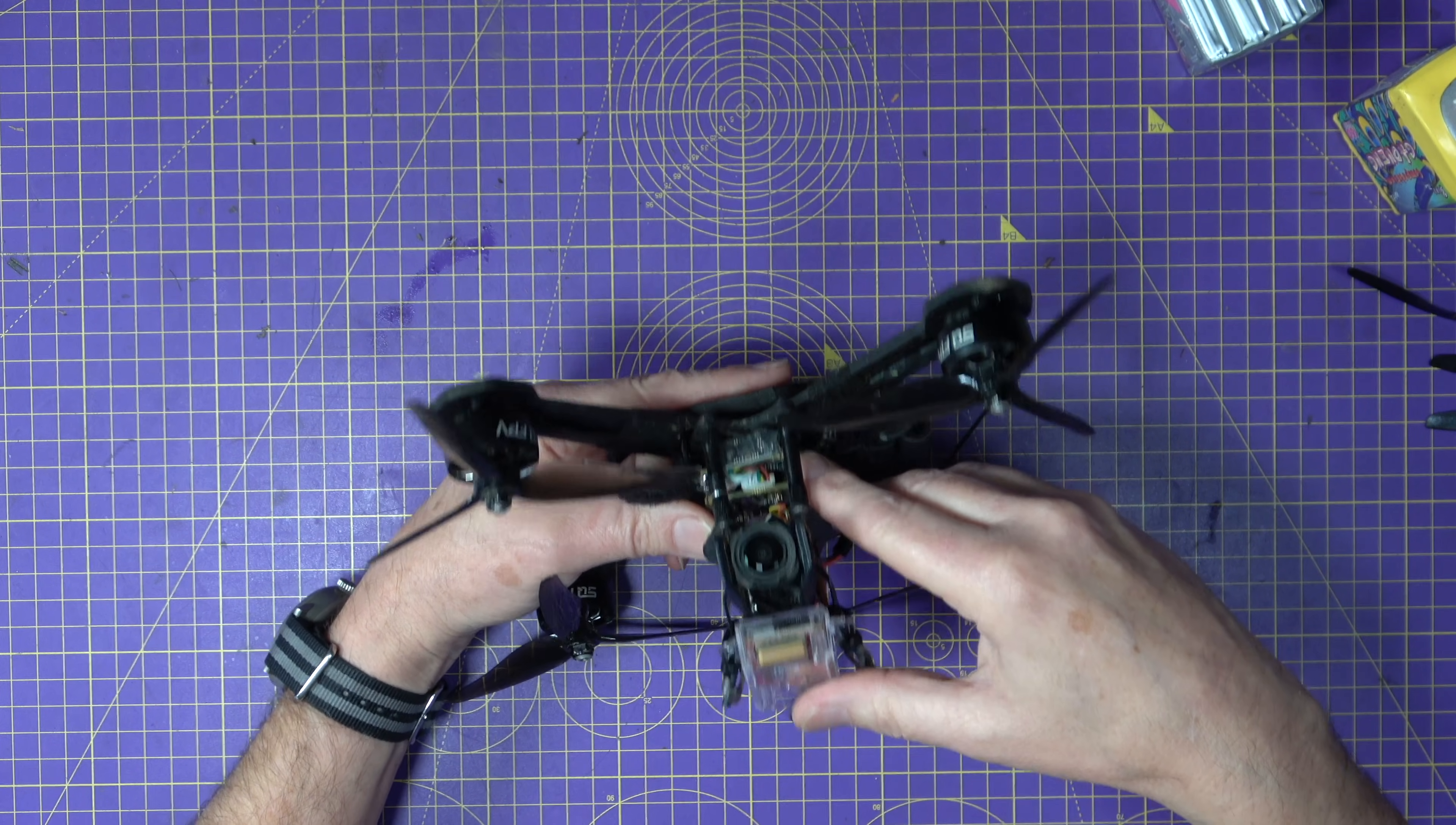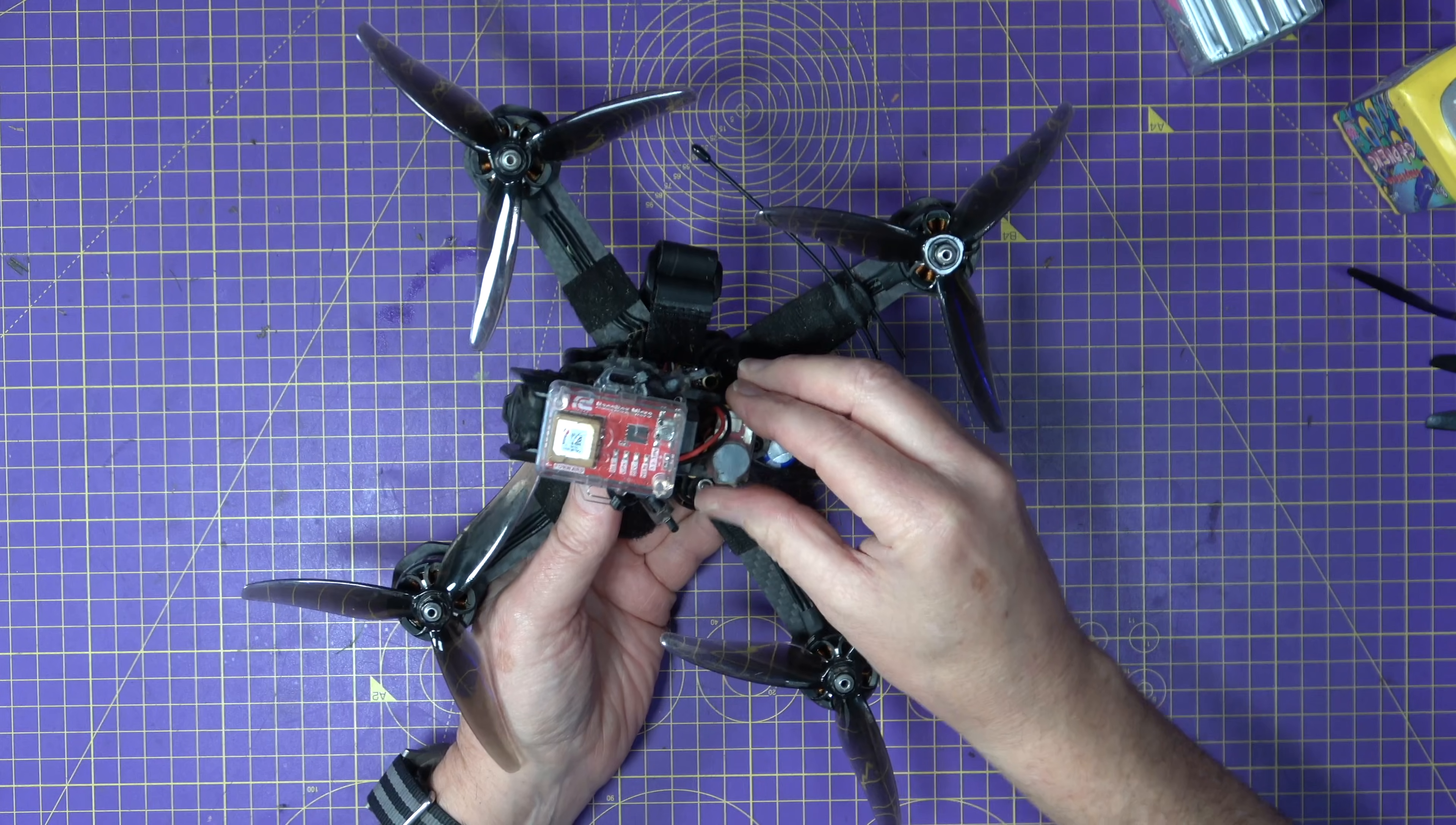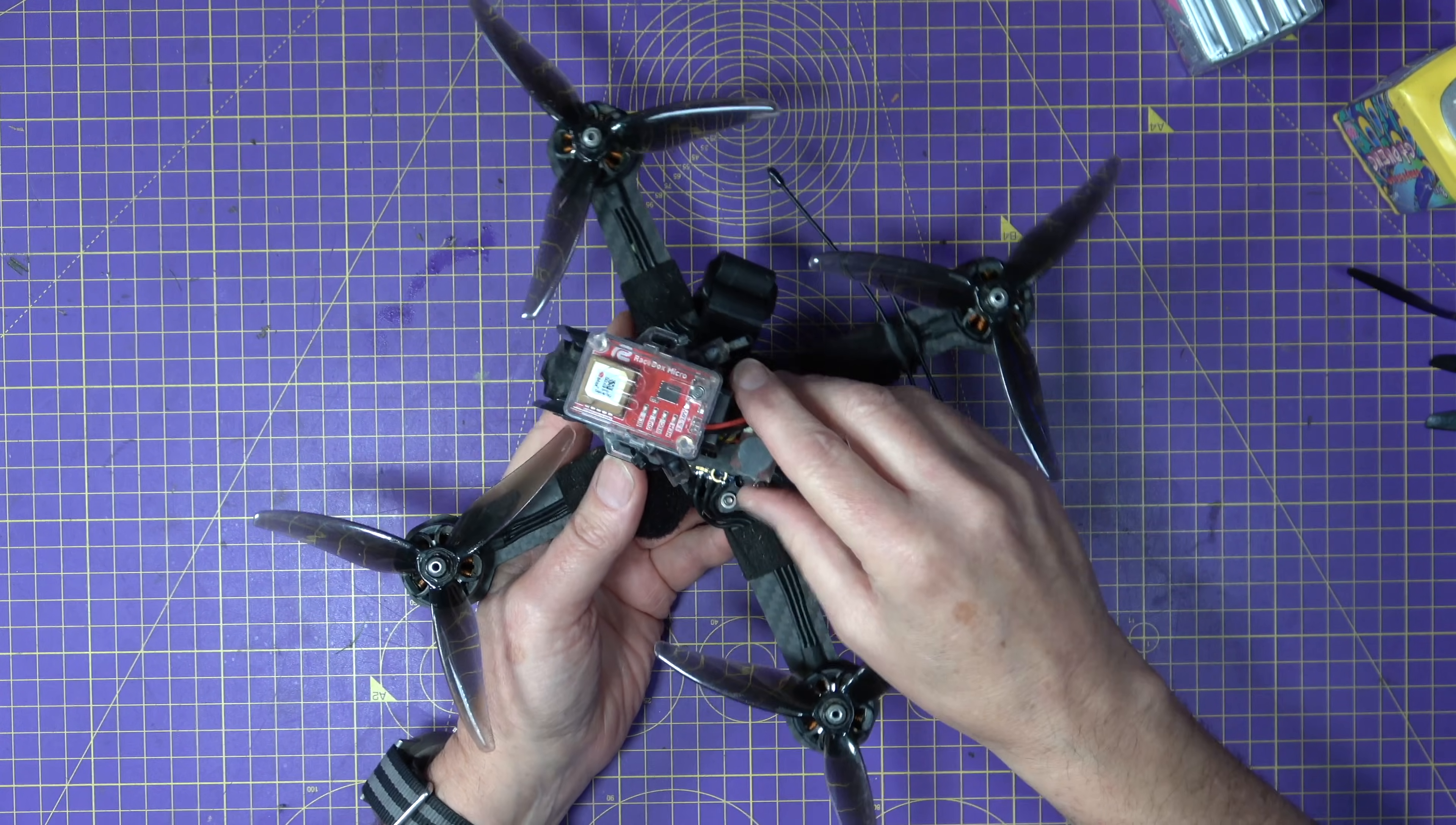Receiver up front is a RadioMaster ELRS crossband and I added a ViFly drone finder on the back here just in case.